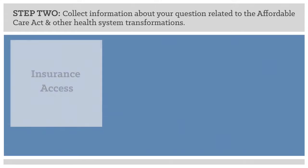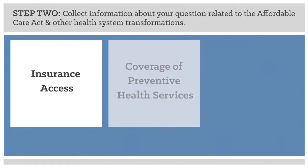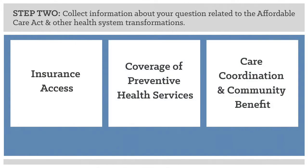Step two involves learning about the requirements of the Affordable Care Act related to your question. Gathering information from the law is one place to start, and you may want to collect additional state and local information. In this online tutorial, the information has been collected for you, and the MCH provisions are organized into three broad categories: insurance access, coverage of preventive health services, and care coordination and community benefit.